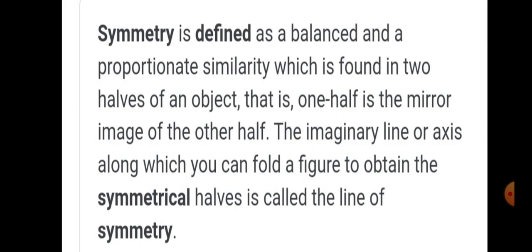Symmetry is defined as a balanced and proportionate similarity which is found in two halves of an object. That is, one half is the mirror image of the other half. The imaginary line or axis along which you can fold a figure to obtain the symmetrical halves is called the line of symmetry. Let's see the examples.